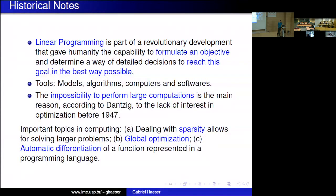An important topic in optimization is dealing with sparsity. Many real-world problems have millions or billions of variables and constraints, but the constraint matrix A typically has many zeros. If you have a linear constraint Ax = b, you want to exploit this sparse structure when computing products like A times x. You must be able to explore sparsity if you want to solve larger problems.